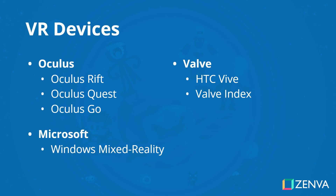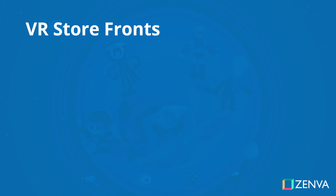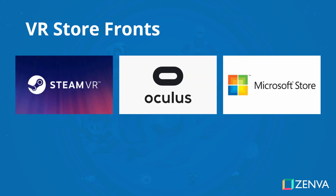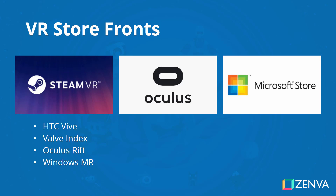Before we go on, I do want to note that we won't specifically go over the Valve Index, as the process of building and setting up Unity to work with the Valve Index is the exact same as the HTC Vive, so you could put those into a bundle. Now let's go over the various VR storefronts — there are three main ones: the Steam Store, the Oculus Store, and the Microsoft Store. Each of these supports a number of different headsets, so it's good to know which store you might want to publish on. The Steam Store probably has the most diverse amount of headsets it can support.